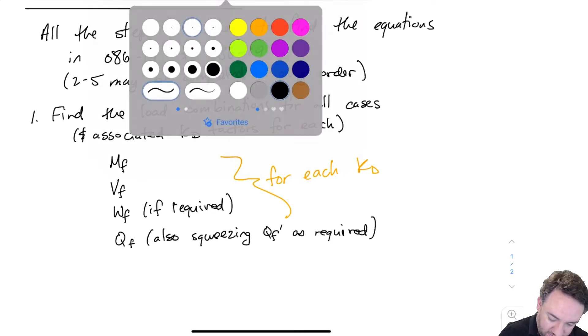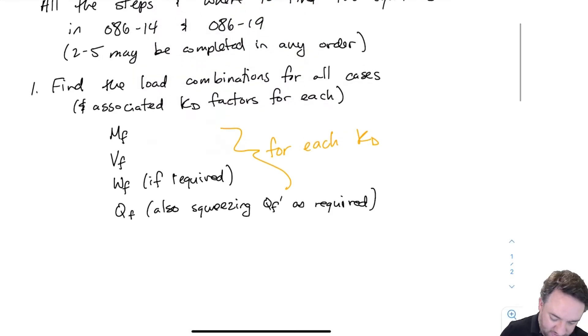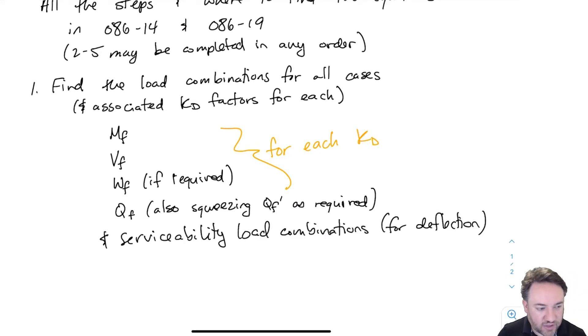And then on top of all those I also need to find the loads that are associated with serviceability. So then once I have all of those load and load combination factored load results for ultimate limit states and serviceability limit states, then I can go ahead and start checking my resistances against those loads.